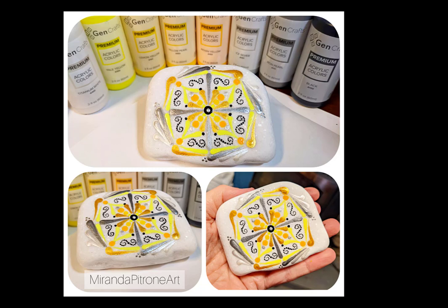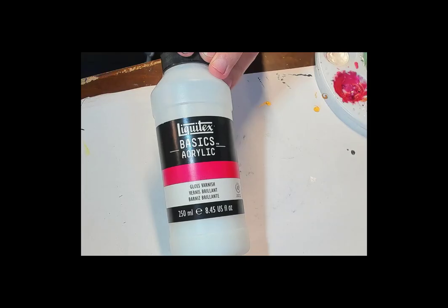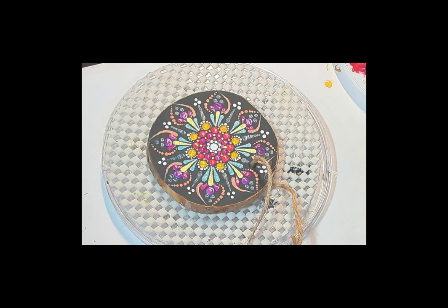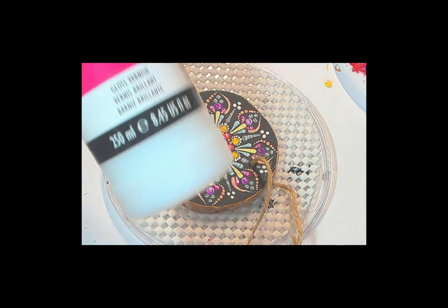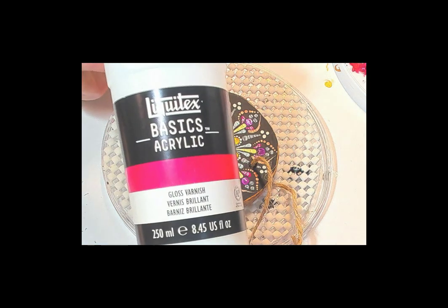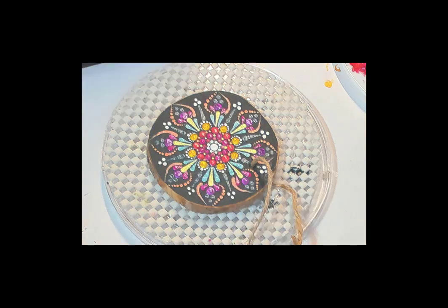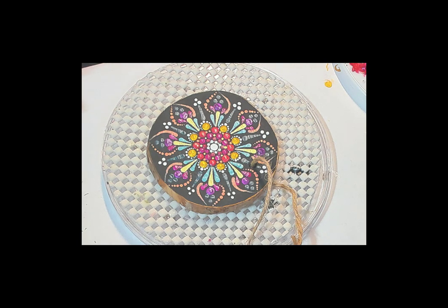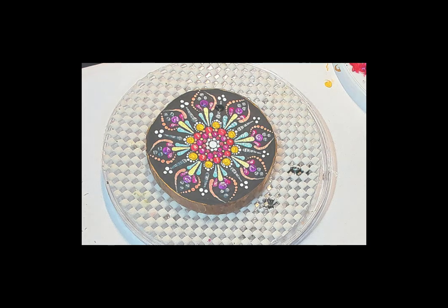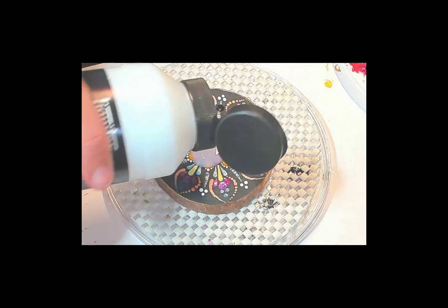So I get asked often what kind of varnish I use. Do I use resin? Why is it so shiny? But I use the Liquitex acrylic gloss varnish on almost all my pieces. That includes wood like this, canvas, stone. It has a UV protectant in it so your colors won't fade. I absolutely love this varnish. So that's what I'm going to use on these next couple pieces.